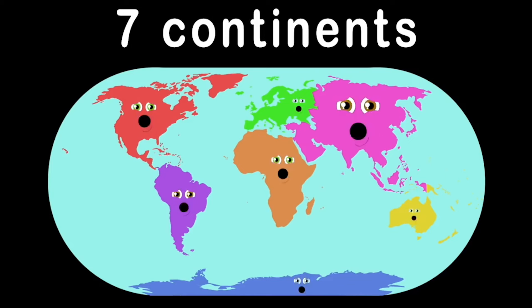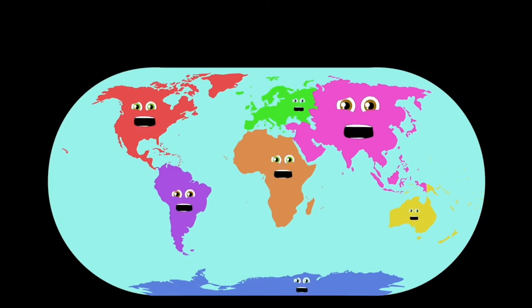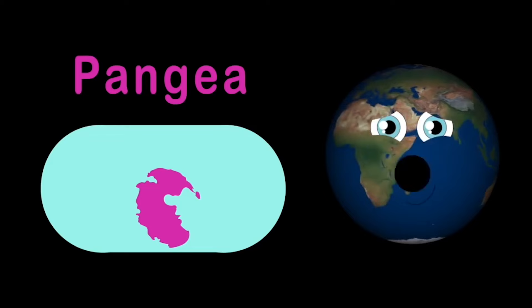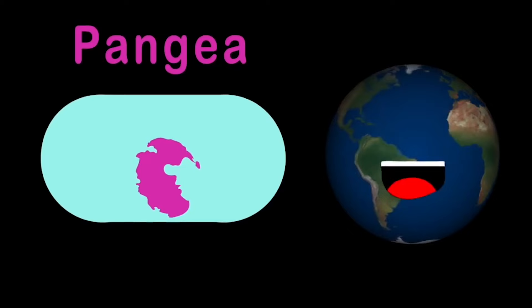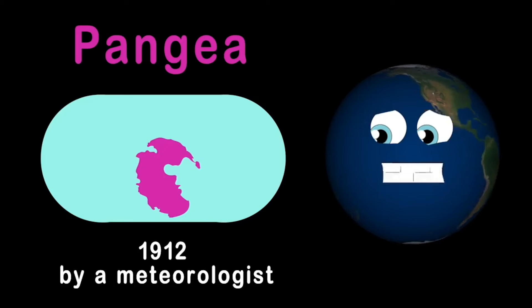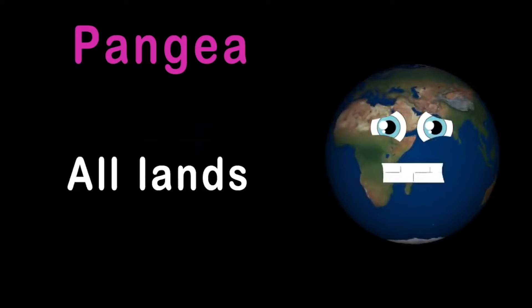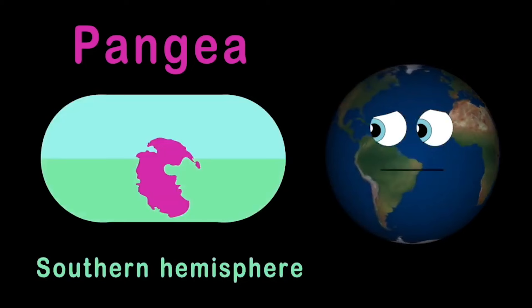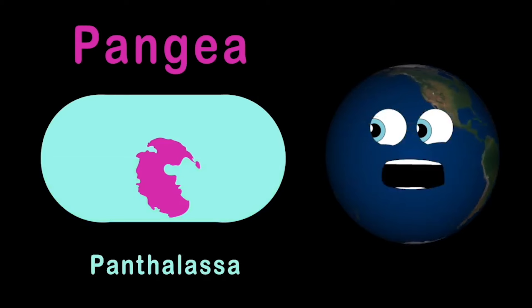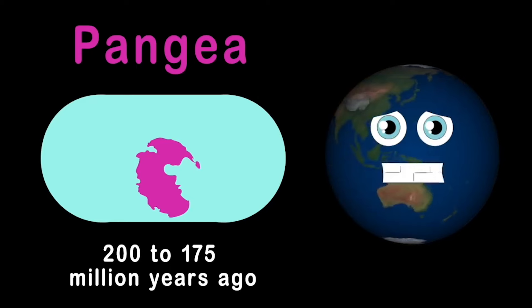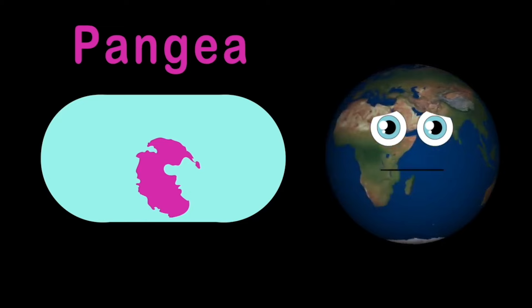We are the seven continents of the world you live on. Let's learn about the continents together as one. The continents we know today were once called Pangea, which formed long ago about 300 million years. Pangea was the beginning before the continental drift, first proposed in 1912 by a meteorologist. The word Pangea was given by Alfred Wegener — Pangea means 'all lands' because they were stuck together.